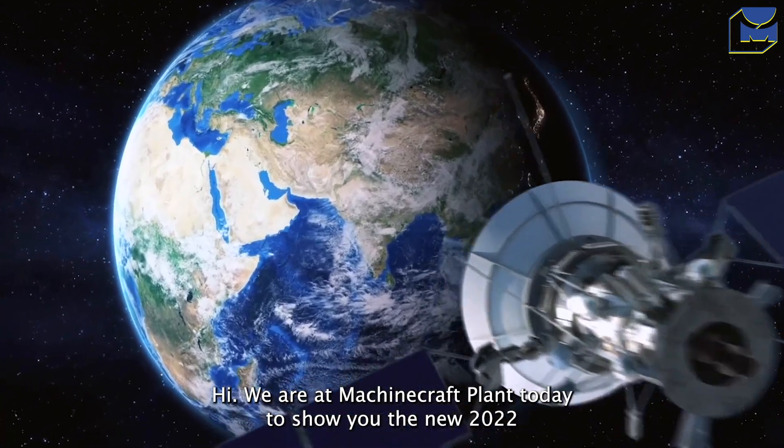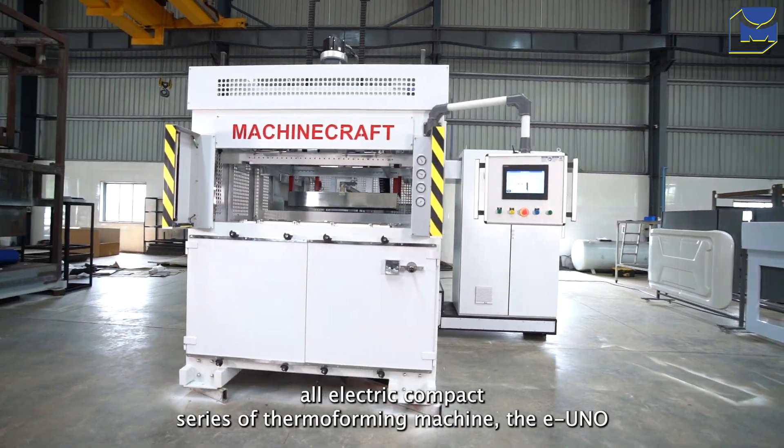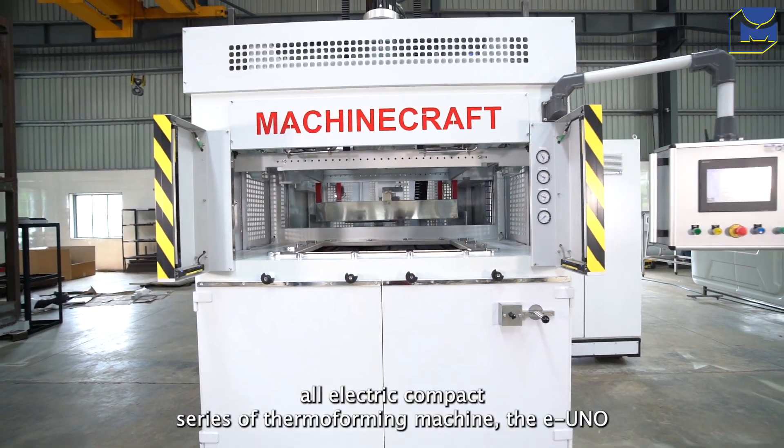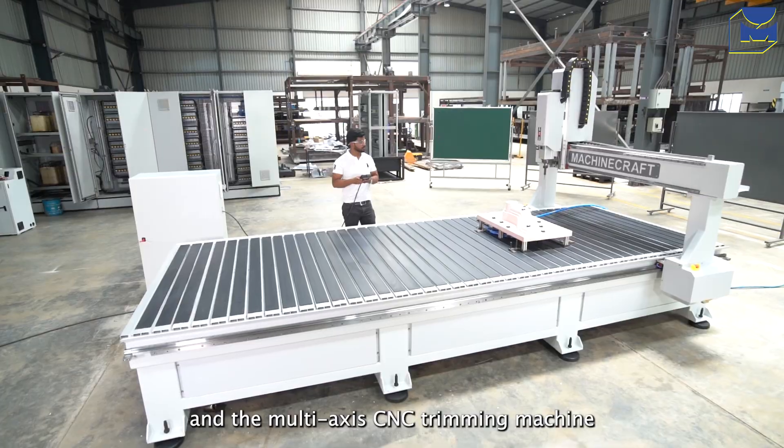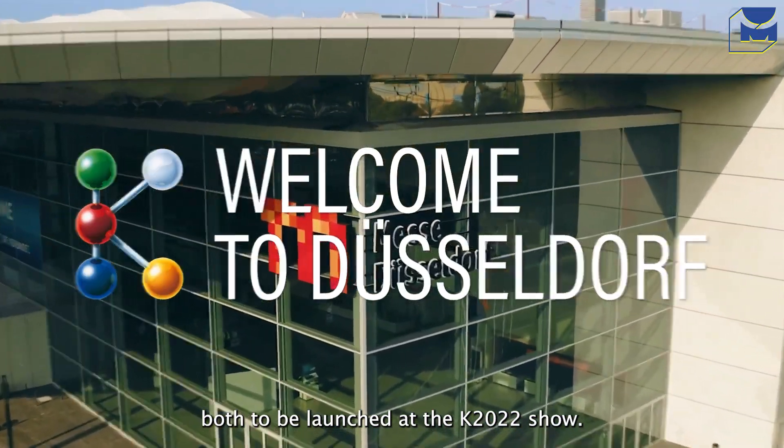Hi, we're at Machine Craft's plant today to show you the new 2022 all-electric compact series of thermoforming machine, the E-Uno, and the multi-axis CNC trimming machine, both to be launched at the K2022 show.